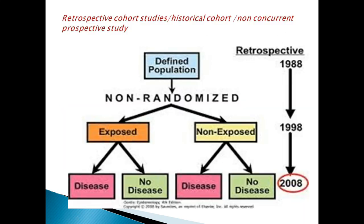In retrospective cohort study — also called historical cohort or non-concurrent prospective study — we are collecting data from history. If the study combines both historical data and future follow-up, it is known as a combination of retrospective and prospective study.